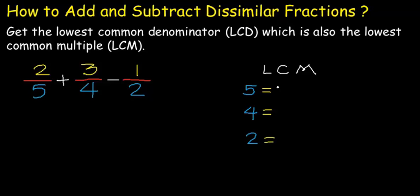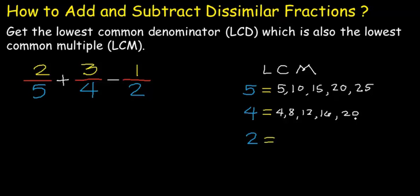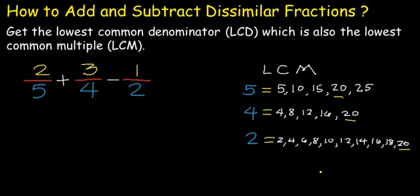List down all the multiples of 5: we have 5, 10, 15, 20, 25. For 4, we have 4, 8, 12, 16, 20 — let's stop at 20 because we have a common multiple with 5. And for 2, we have 2, 4, 6, 8, 10, 12, 14, 16, 18, and 20. As we can see, the least common multiple among the three numbers is 20, so our lowest common denominator is 20.